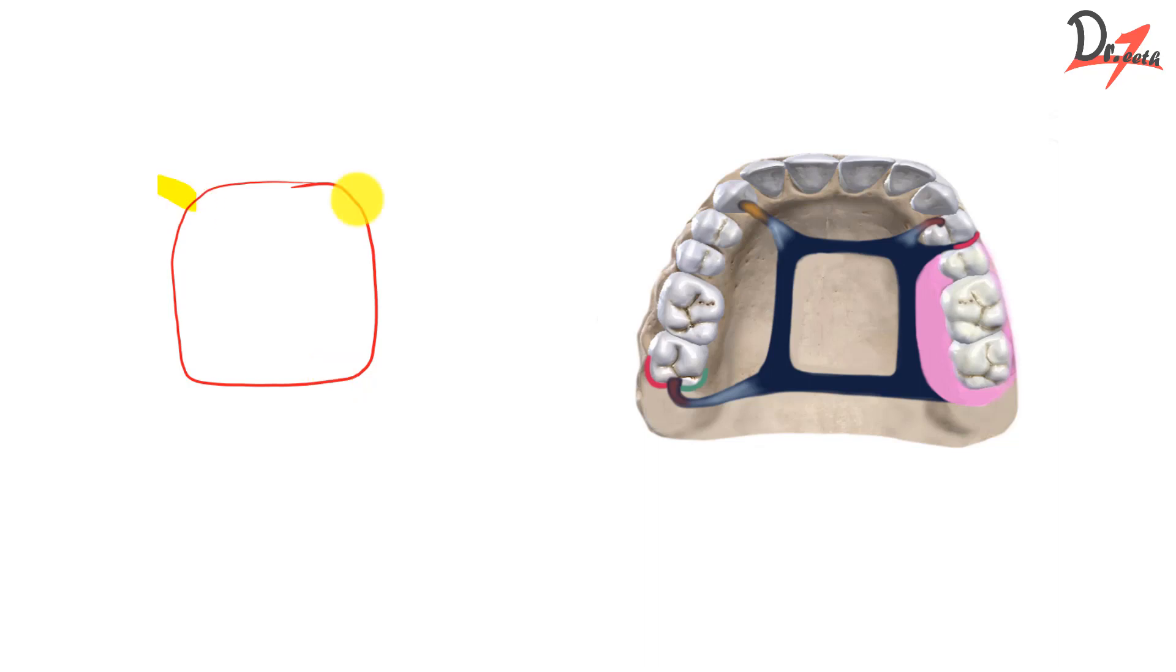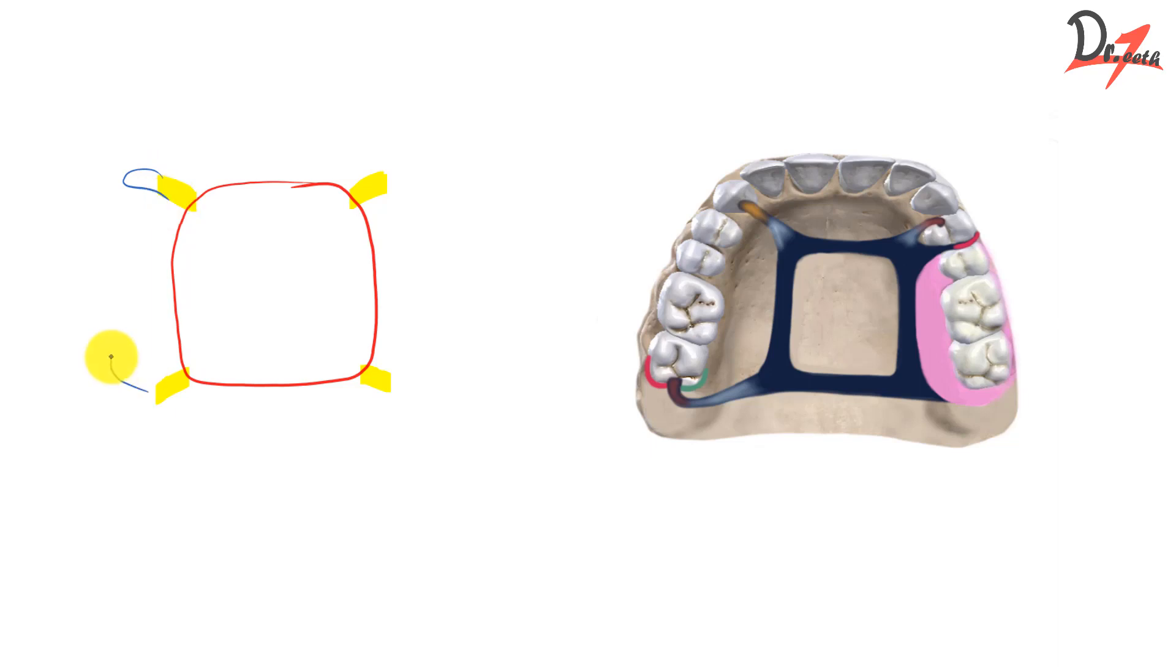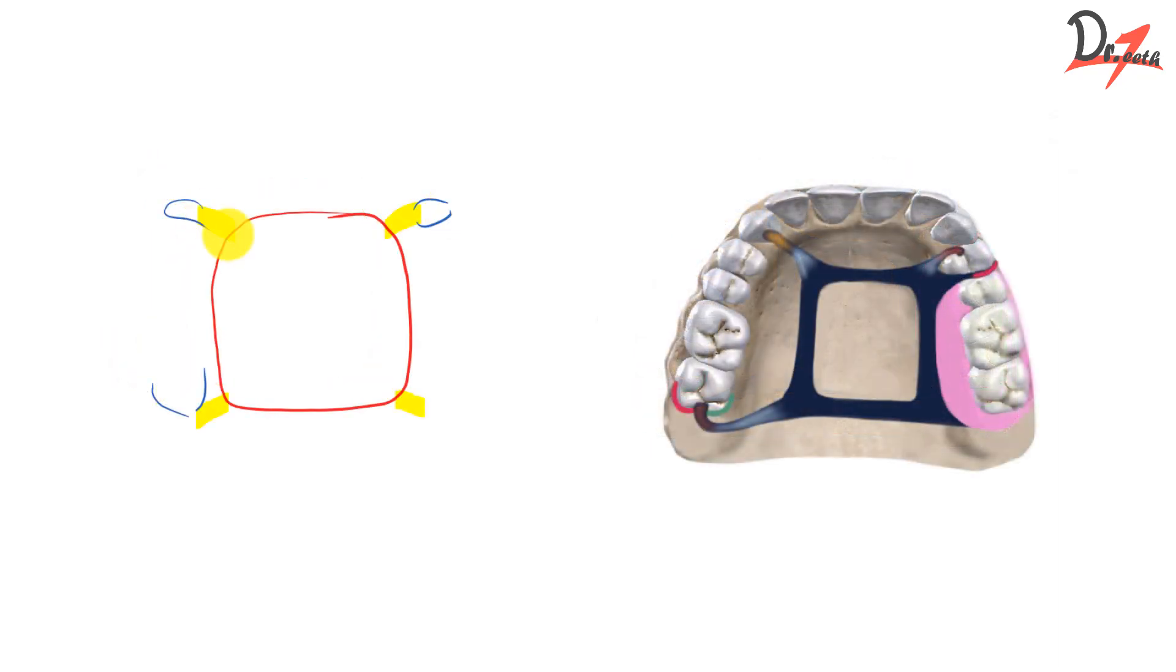Then we have something like this. I'm just tracing what I have drawn here. And then we have some processes here. So this yellow thing, which is connecting the major connector with the rest of the component, that is the minor connector. And these extra things, they could be clasp assembly, indirect retainer, occlusal rest, or cingulum rest.